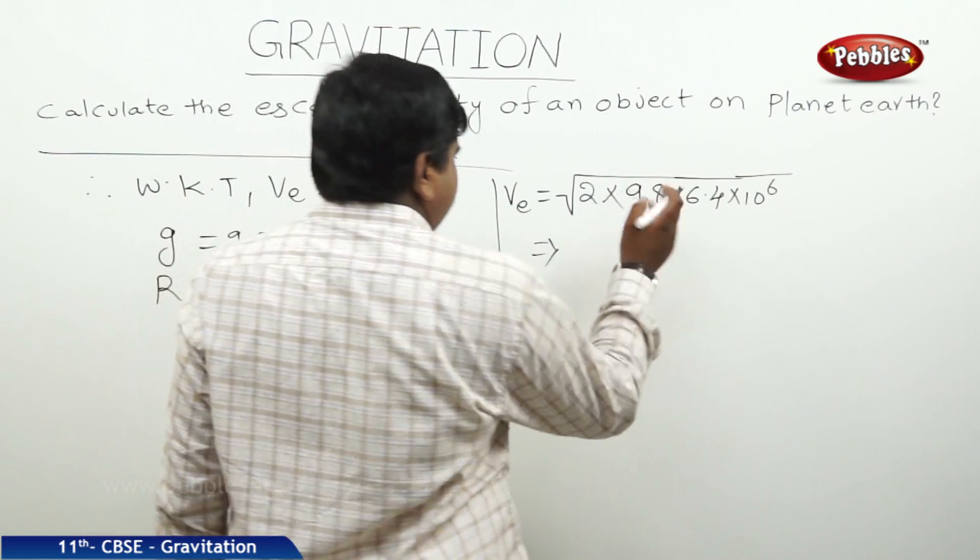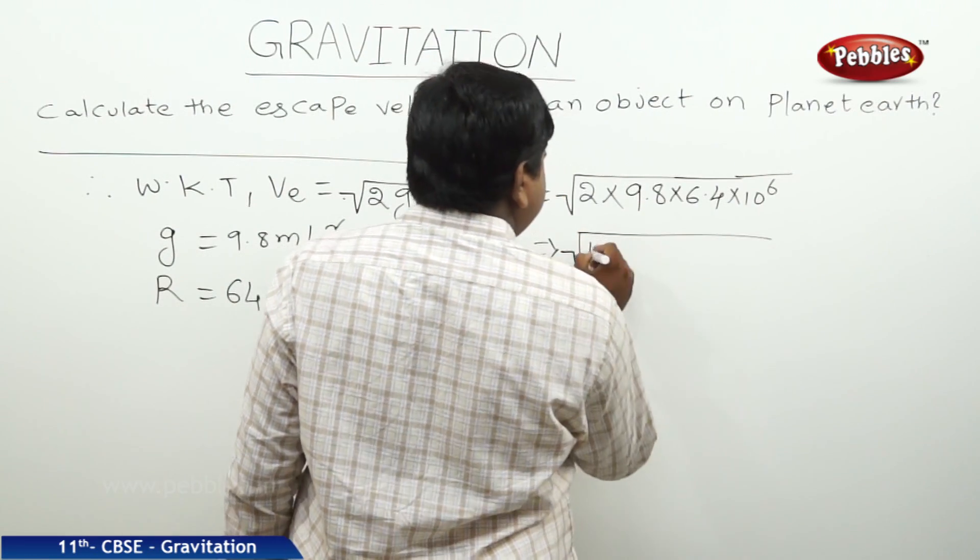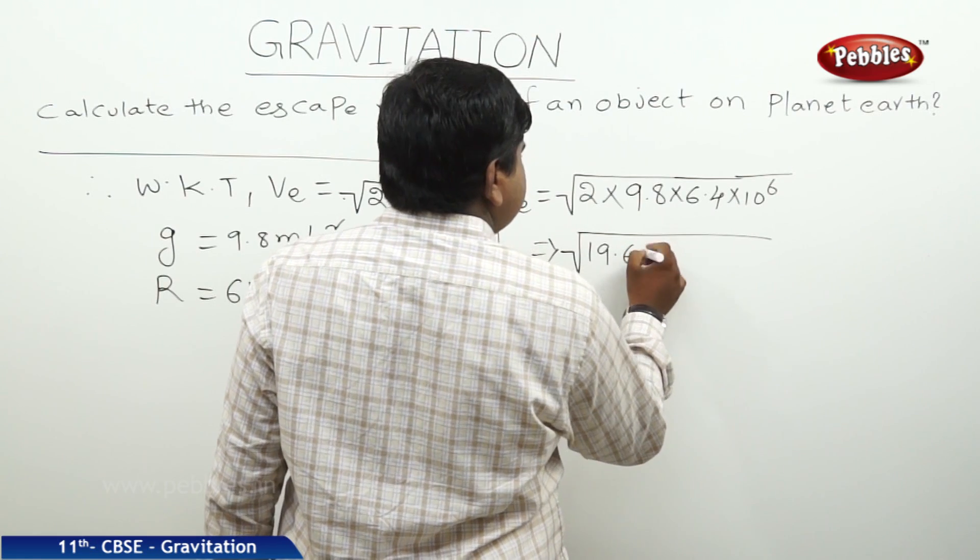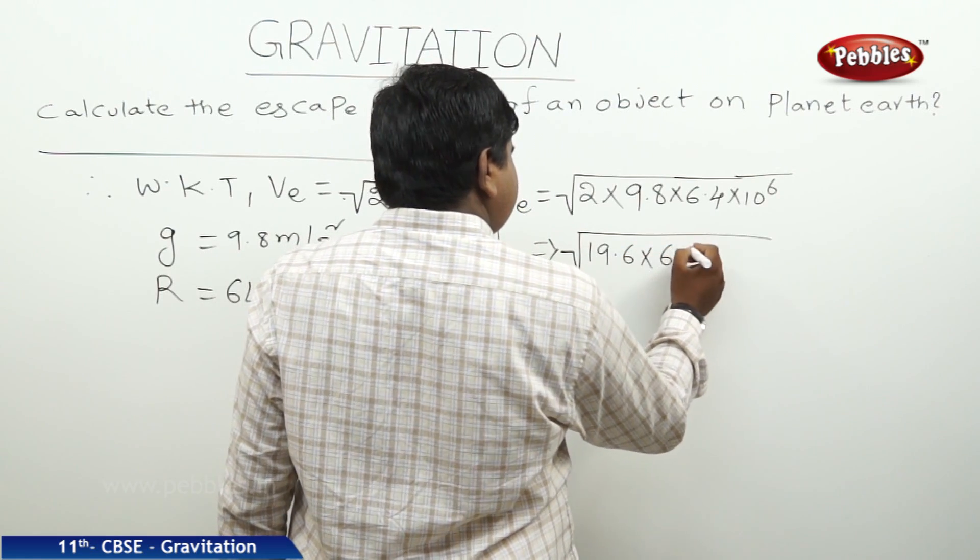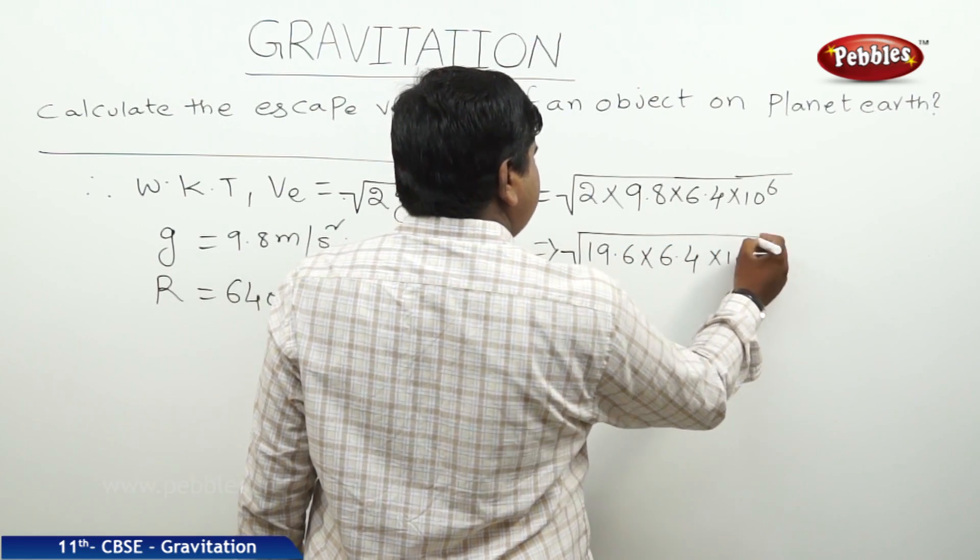So, we can write the square root of 19.6 into 6.4 into 10 to the power of 6.